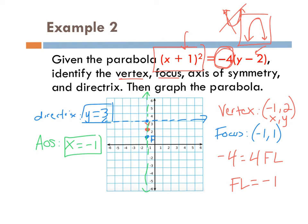The last step is the latus rectum to get the correct width. The coefficient is −4, so the latus rectum is absolute value 4. From the focus point, add 2 units to the right and subtract 2 units to the left — total distance of 4. Connecting those two additional points with the vertex gives the final shape of the parabola.